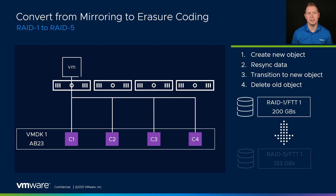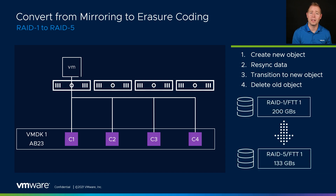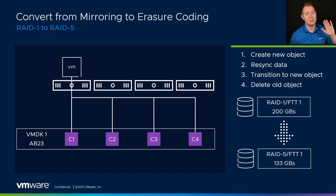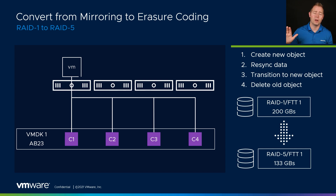From a storage perspective, with our 100-gig VMDK, with RAID1 FTT of one, we're using 200 gigs. And then with our RAID5 FTT of one, we're using 133 gigs.